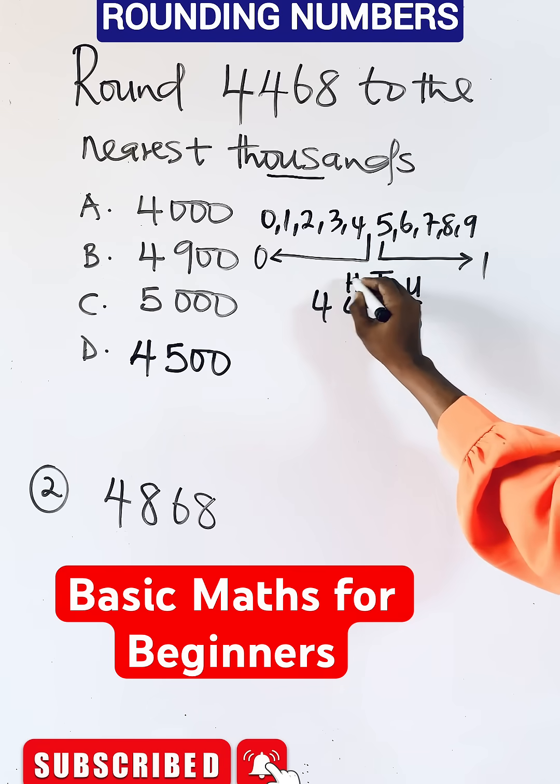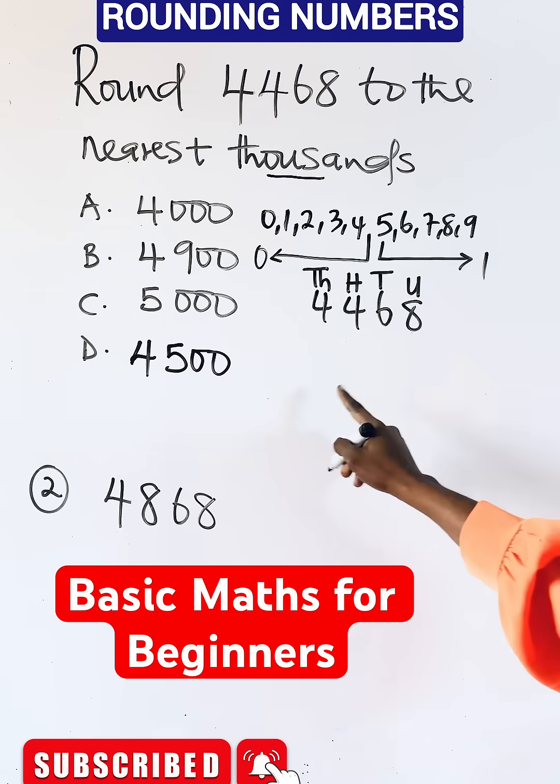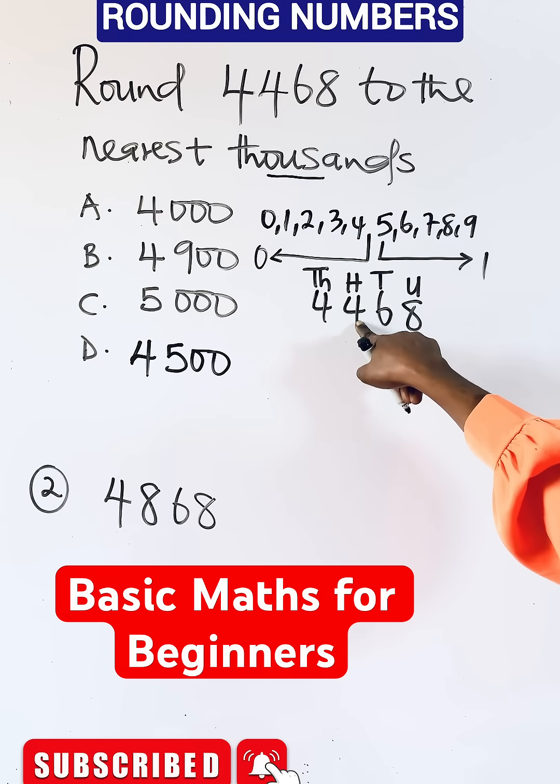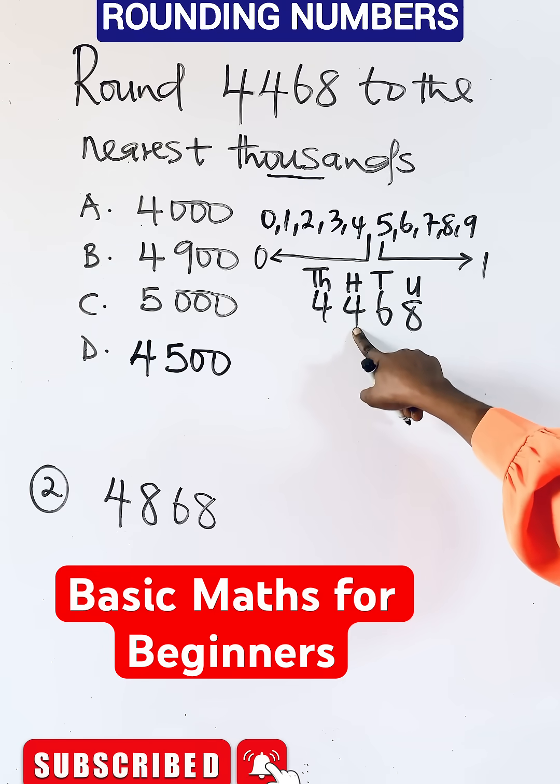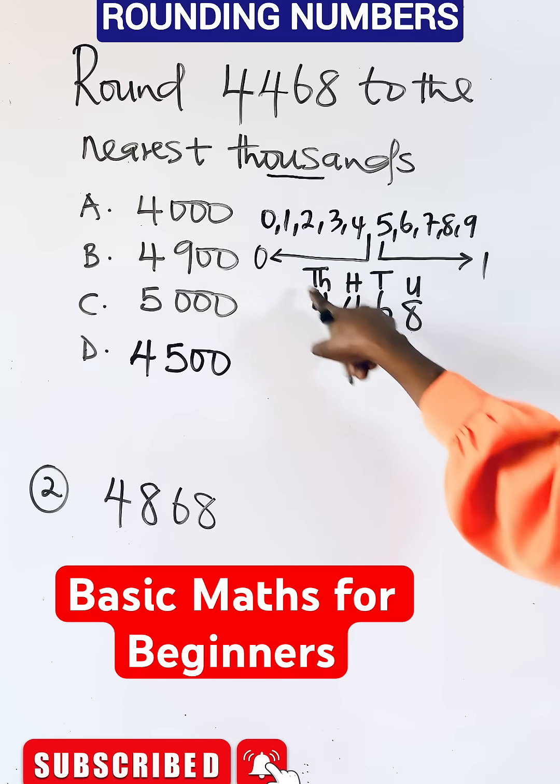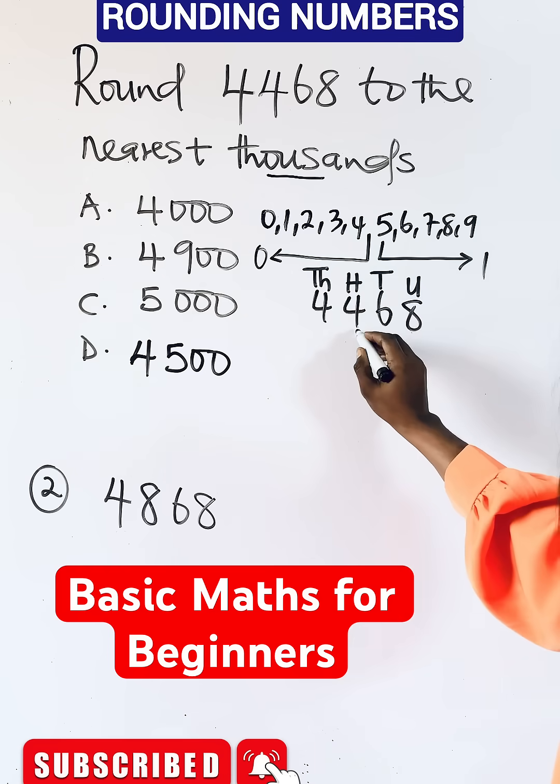Now for you to round to thousands, start from hundreds. And if you look at 100, 100 is in the family of zero. So if this is zero, it means add zero to this four.